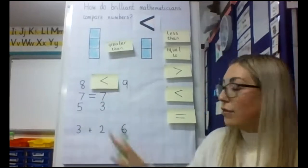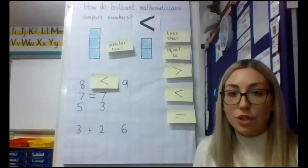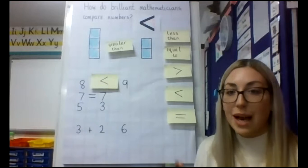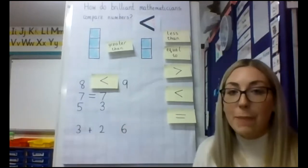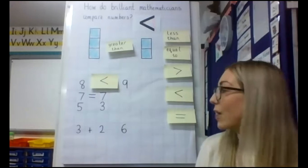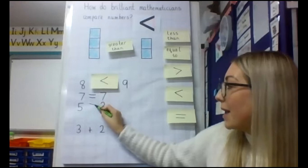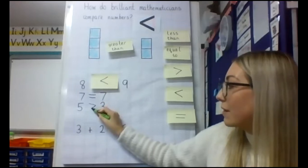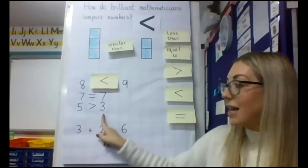We have got five and three, and if we were to compare these numbers, you might want to use cubes as well to show and represent how big three is and how big five is. And you'll be able to see that five is a bigger number. Five is the greatest number, so I'm going to point my biggest end to five like this. So five is greater than three.